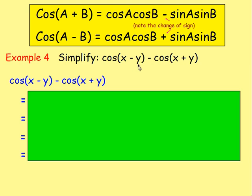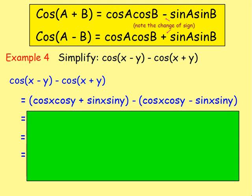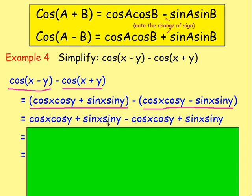Example 4: simplify cos(x minus y) take away cos(x plus y). What you want to do first is expand cos(x minus y) and also expand cos(x plus y). Expanding cos(x minus y) gives cos x cos y plus sin x sin y. Then taking away, expanding cos(x plus y) gives cos x cos y minus sin x sin y — but with brackets around it. Getting rid of the brackets: cos x cos y plus sin x sin y, then take away cos x cos y, and take away negative sin x sin y, which means you add sin x sin y.